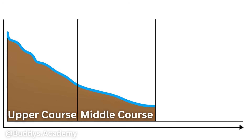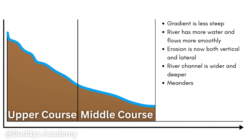Now if you're taking a look at your middle course, we can see that it's going to occur between the upper and the lower course. Your river is going to be flowing through gentle slopes, so the gradient is going to be less steep. Your valley is going to have more of a U-shape as compared to a V-shape in the upper course. Because in the middle course your river is going to have more water and it's going to flow more smoothly, the flow is going to be less turbulent — it's going to be more laminar, more gentle and smoother. In this course, erosion is going to happen in both vertical and lateral directions. Your river channel is going to be much wider and deeper. Now in your middle course, you're also going to find your meanders — a meander is basically a bend in a river formed because of erosion on the outer banks and deposition on the inner banks. We will actually be discussing that in a future video.